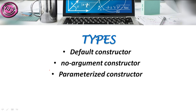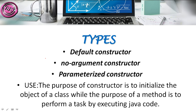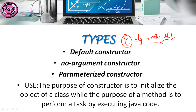Now let us discuss the use of the constructor and the difference between a constructor and a method. Here I am creating an object named xObj, where x represents the class name and obj represents the object name. So xObj = new x(). The main difference between a constructor and a method is that a method has a return type but a constructor doesn't. The main purpose of a constructor is to initialize the object of a class, while the purpose of a method is to perform a task by executing Java code.